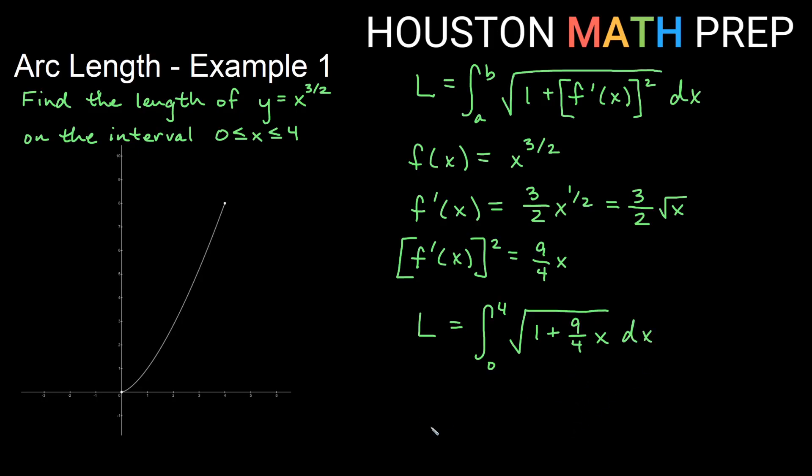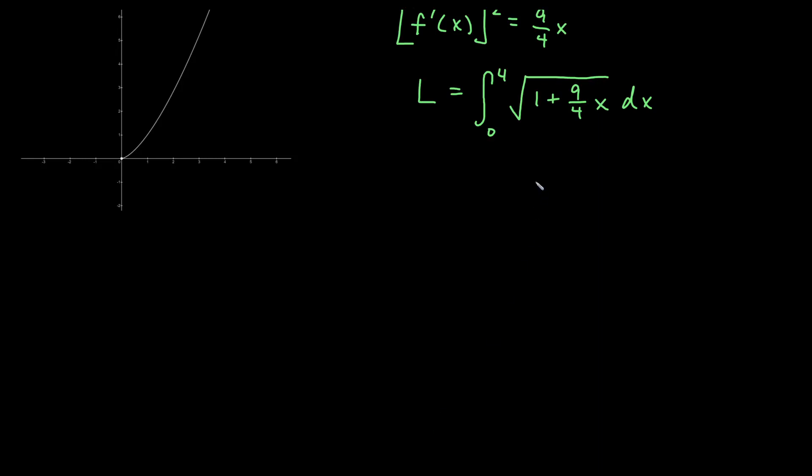This would require a substitution. I'm going to go ahead and do a u substitution here. I will say that u equals what's inside of the square root, 1 plus 9 fourths x. And if that's true, then du is equal to 9 fourths dx.